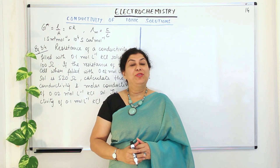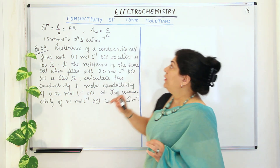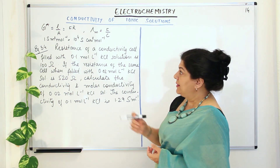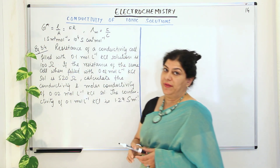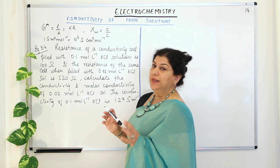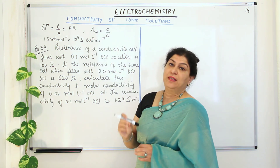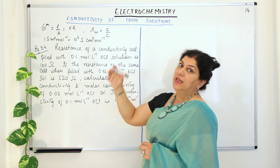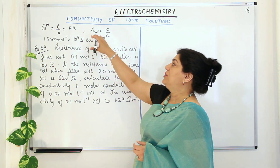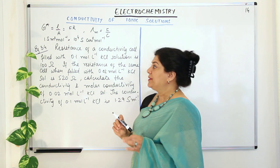Hello, I am Seema and welcome to part 14 of the chapter electrochemistry. Let us now solve two numerical problems based on the conductivity and the measurement of the conductivity of ionic solutions. We have understood how to calculate the cell constant g* = l/A, equal to κ×R, and that molar conductivity is κ divided by concentration in mol/m³ or mol/cm³.